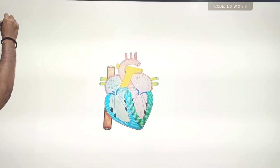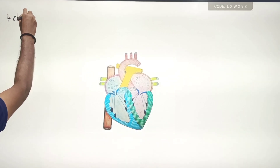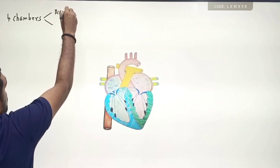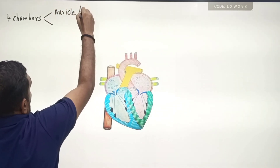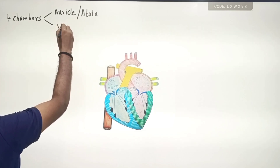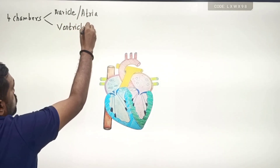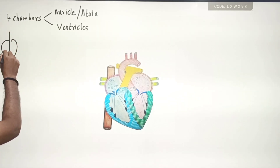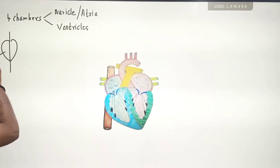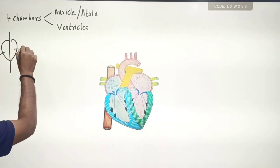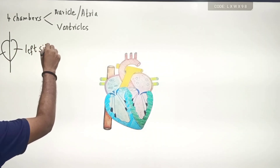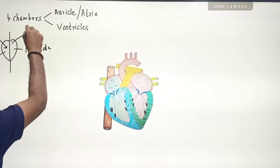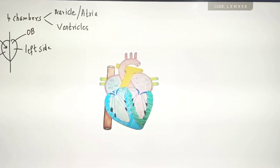The first point to remember is that the human heart consists of four chambers. The upper two chambers are called auricles or atria, whereas the lower two chambers are called ventricles. Most importantly, the heart is divided into two halves — the right side and the left side. The right side of the heart will always receive deoxygenated blood, and the left side will always receive oxygenated blood.